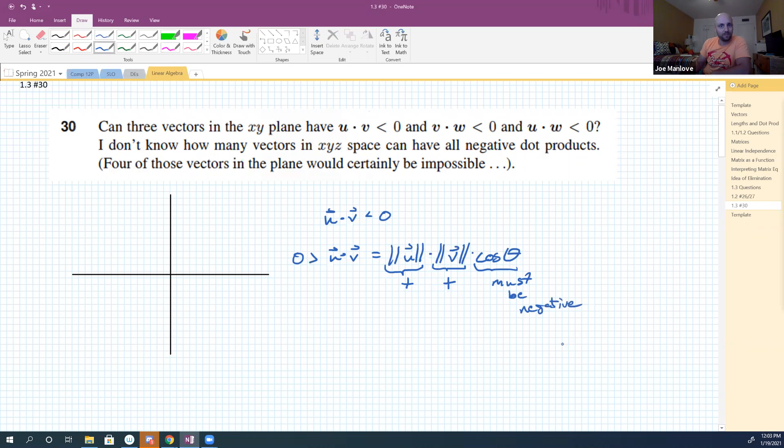So if this thing stands a chance in hell of being negative, where does it have to come from? The cosine, yeah exactly. So this must be negative. Everybody with me on that?